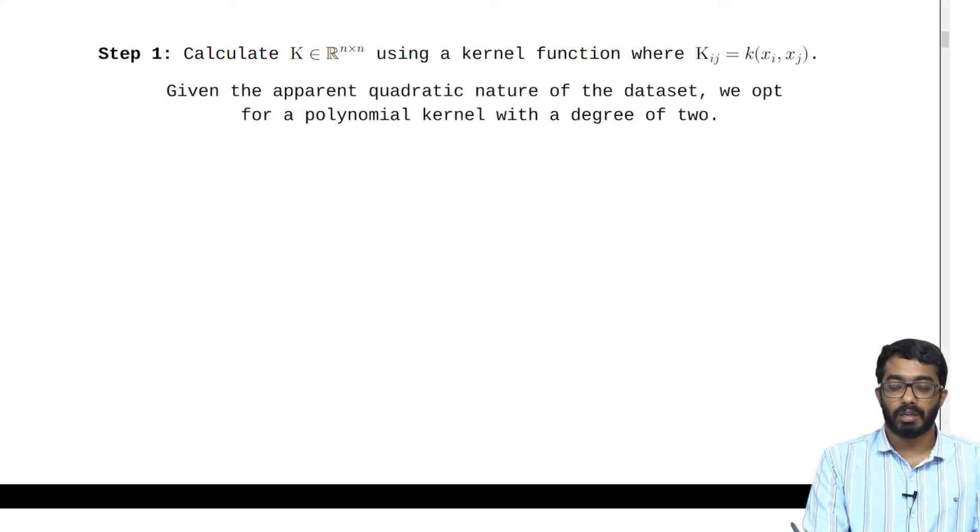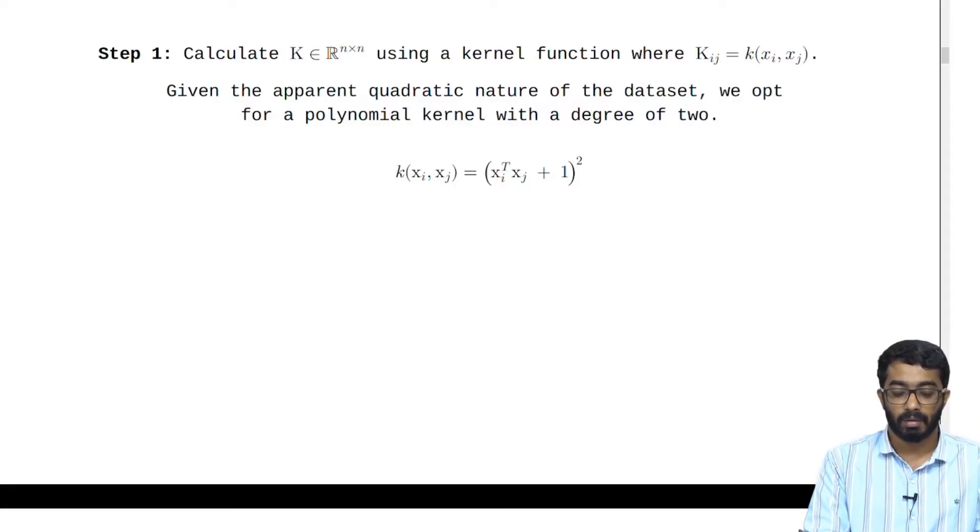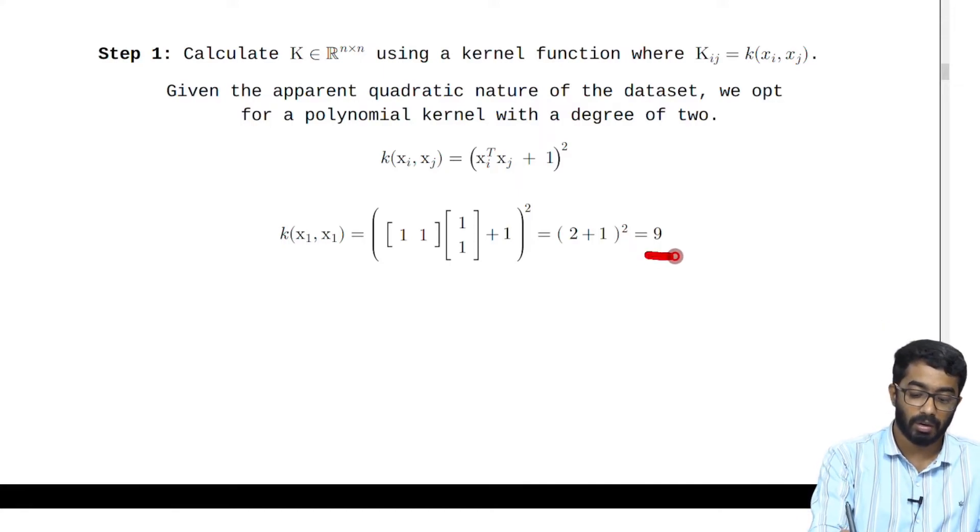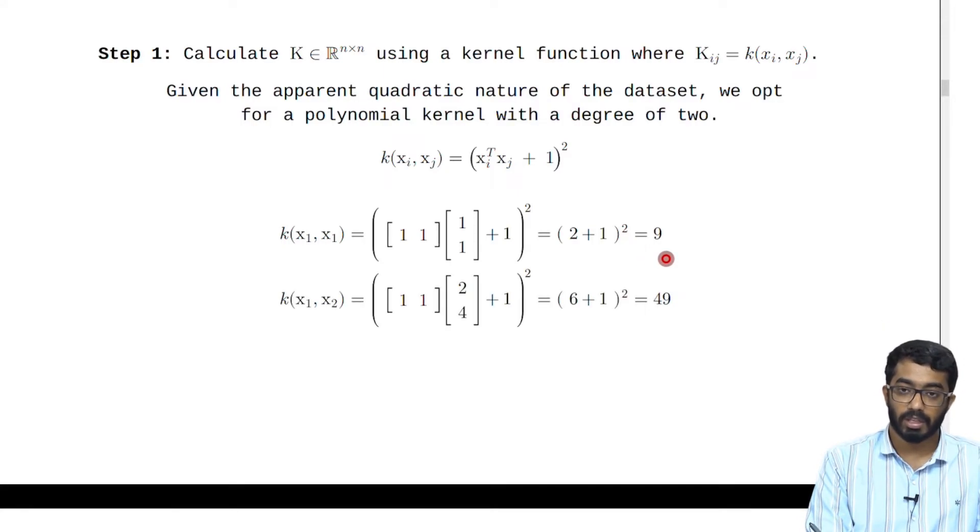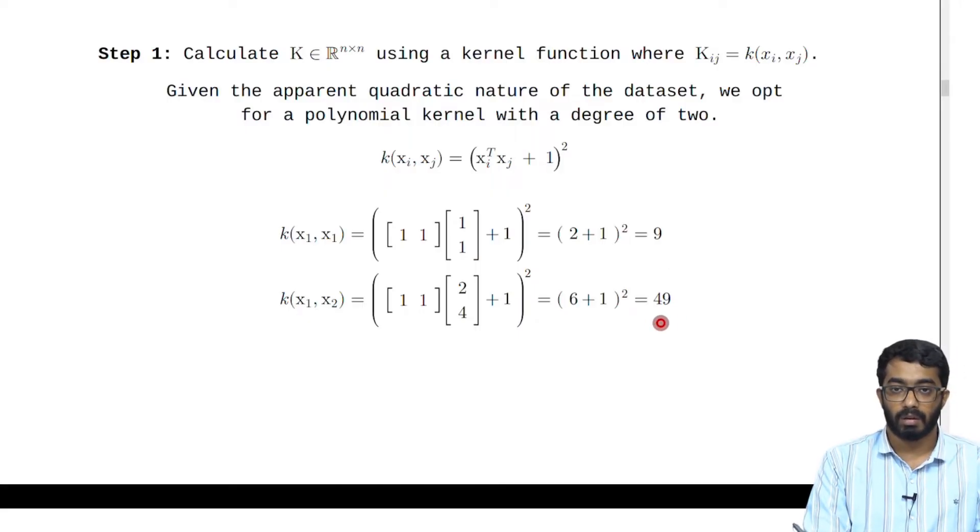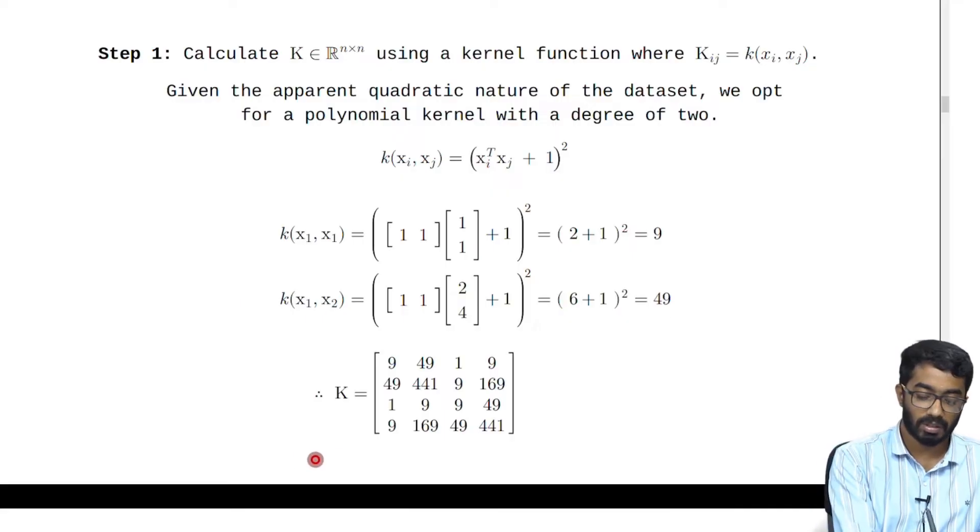Given the apparent quadratic nature of the data set we opt for the polynomial kernel of degree 2. This kernel is given by K(X_i, X_j) equals (X_i transpose X_j plus 1) squared. Solving for K(X_1, X_1) we get value 9, K(X_1, X_2) we get the value 49, and so on we get the value for K to be as this.